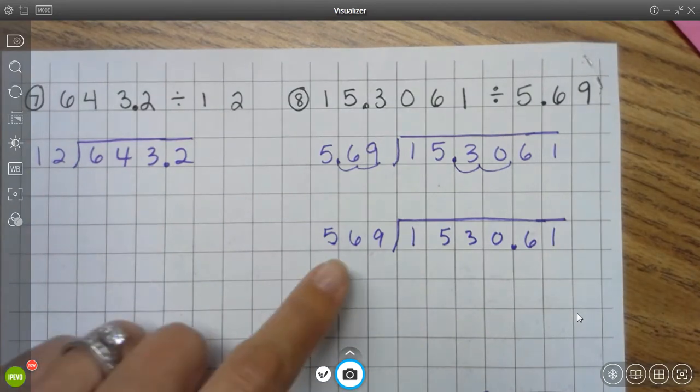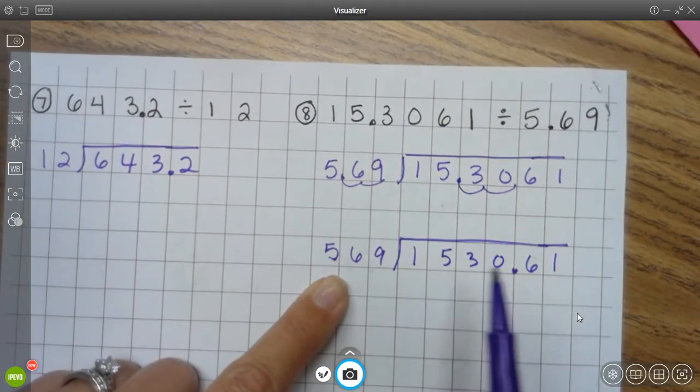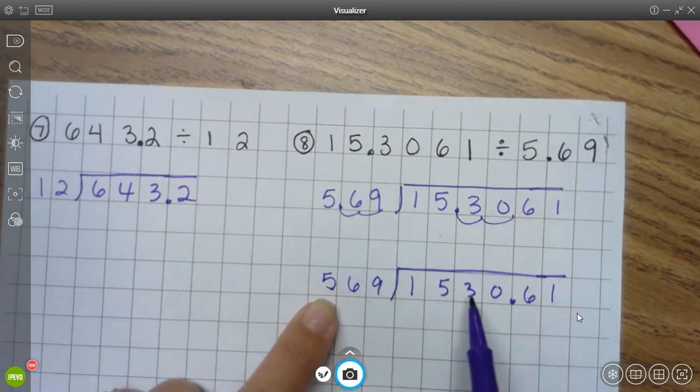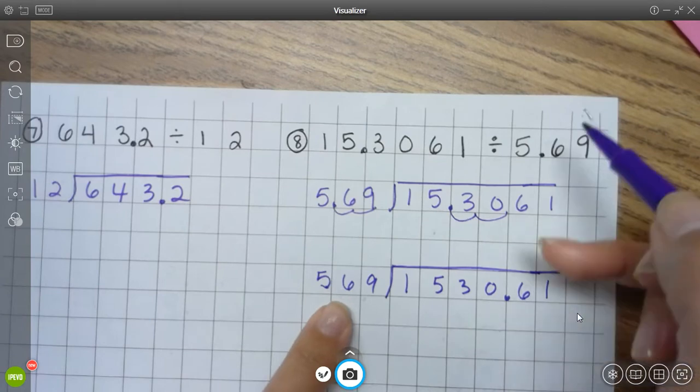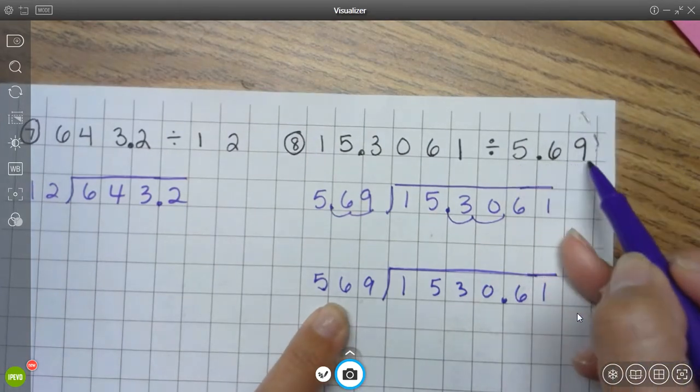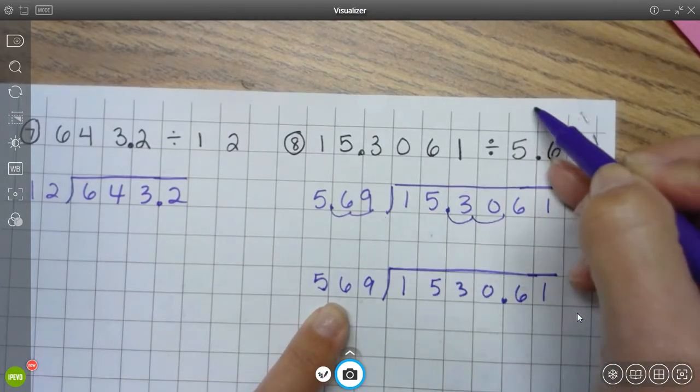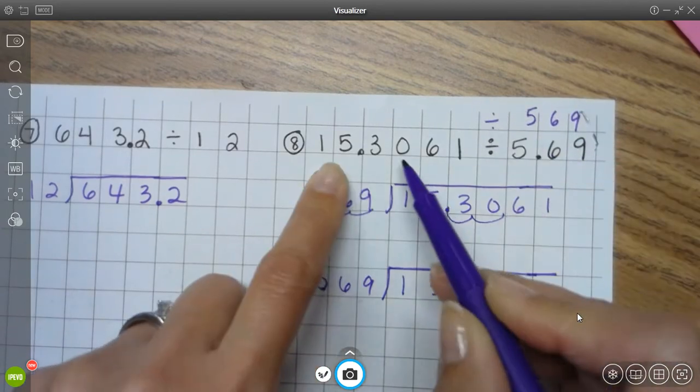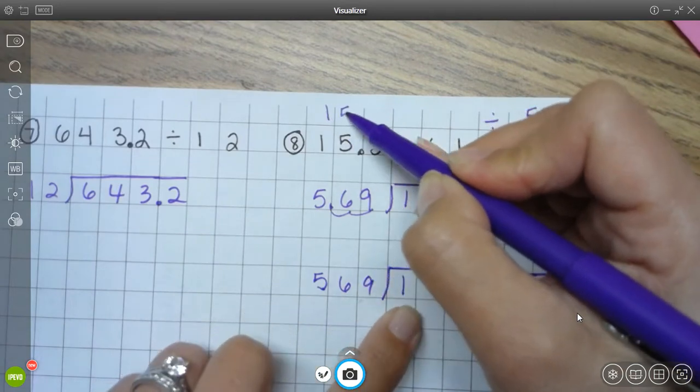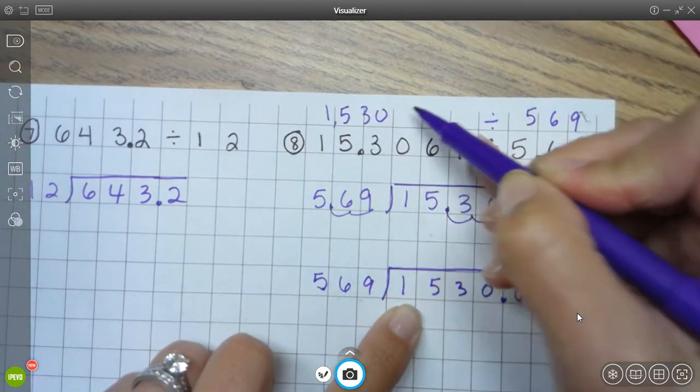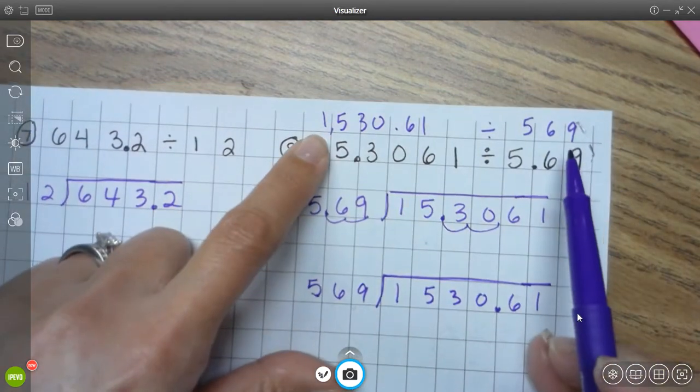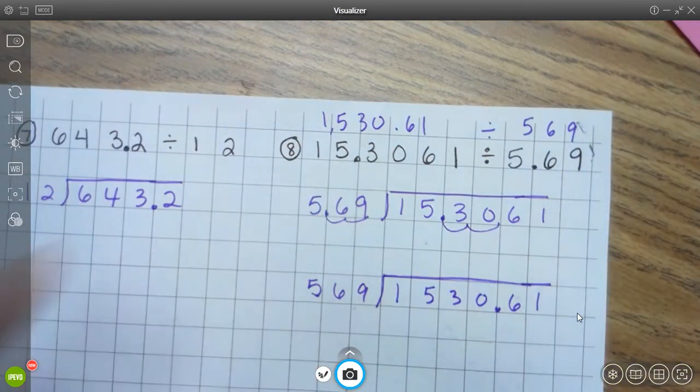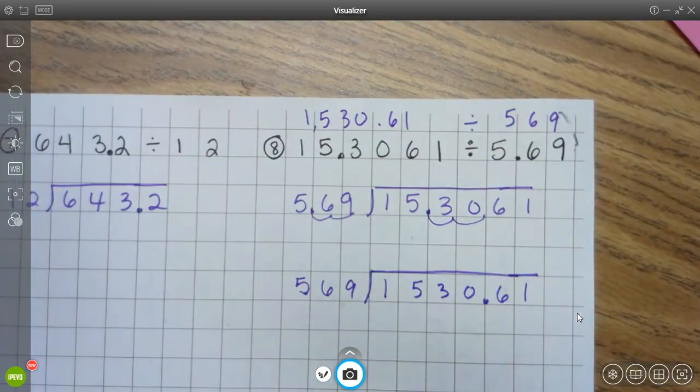Okay, so I just made compatible numbers. Remember we talked about equivalent expressions? Not, sorry, not compatible numbers. I just created an equivalent expression to this problem. Okay, so again, when we talked about this 5 and 69 hundredths, if we multiplied it by 100, we would end up with whole number 569. When we multiplied this number by 100, we ended up with 1,530 and 61 hundredths, right? So this expression is equivalent to this expression. Okay, so again, just review. I know it's not the problem, but just something to talk about.